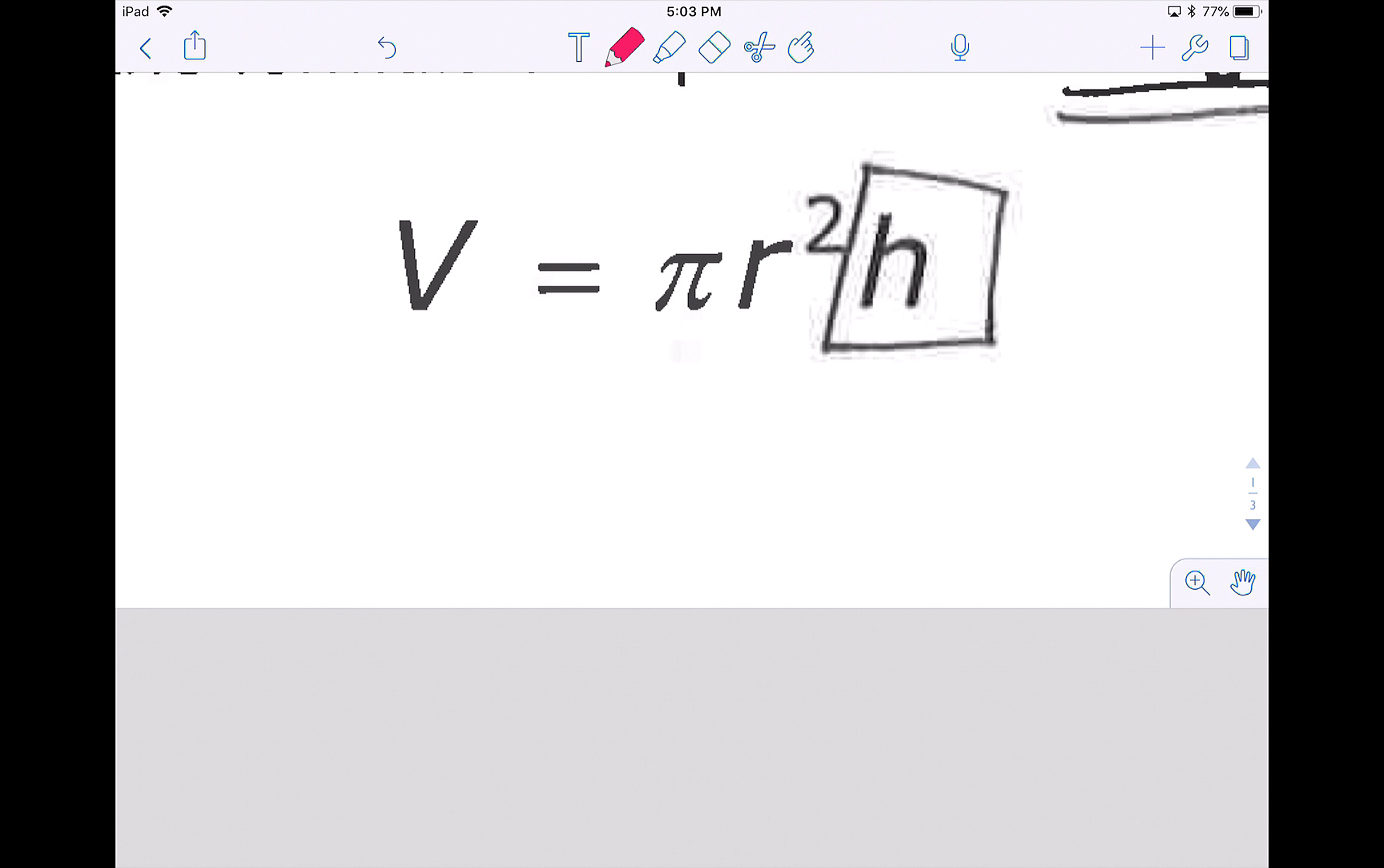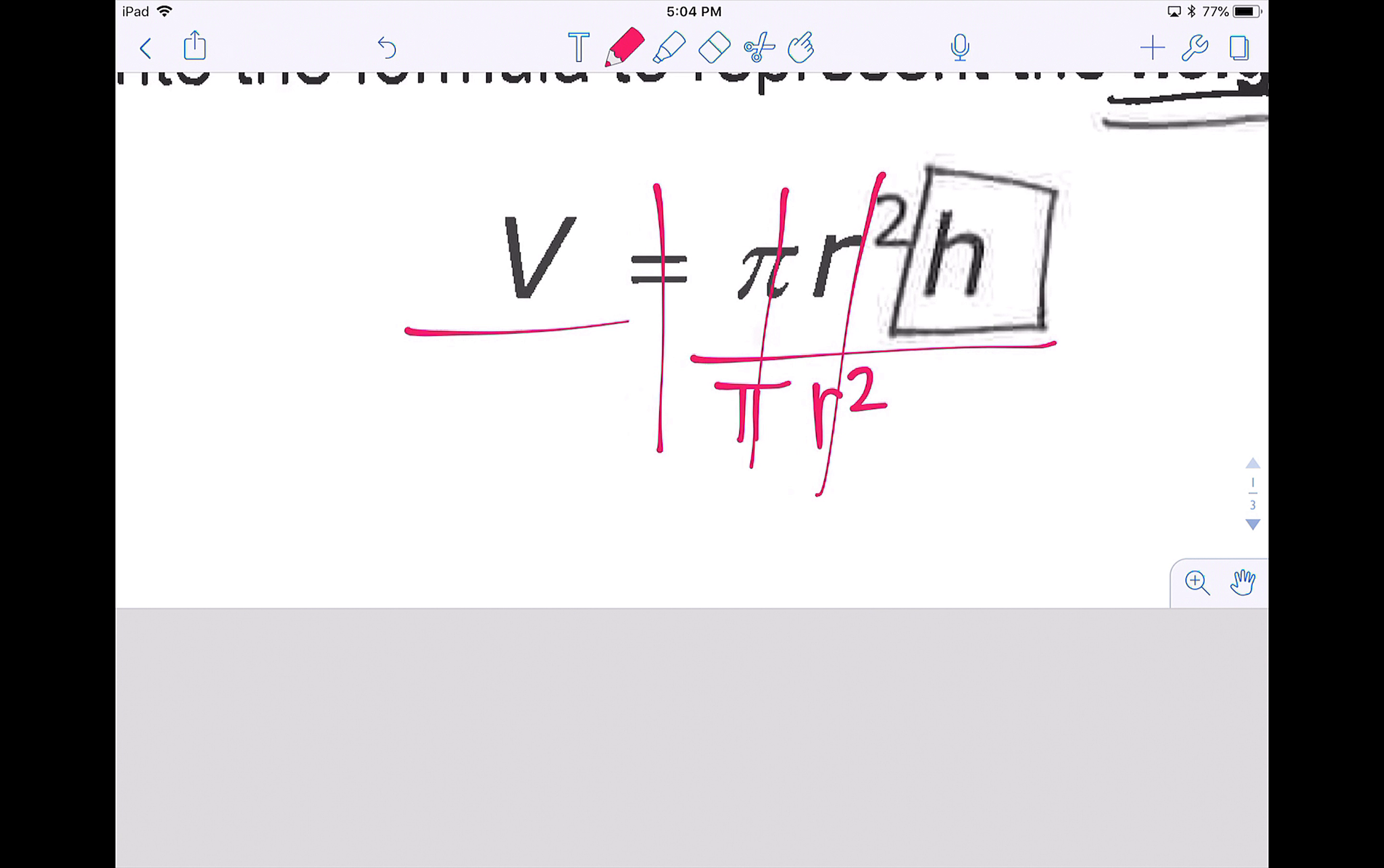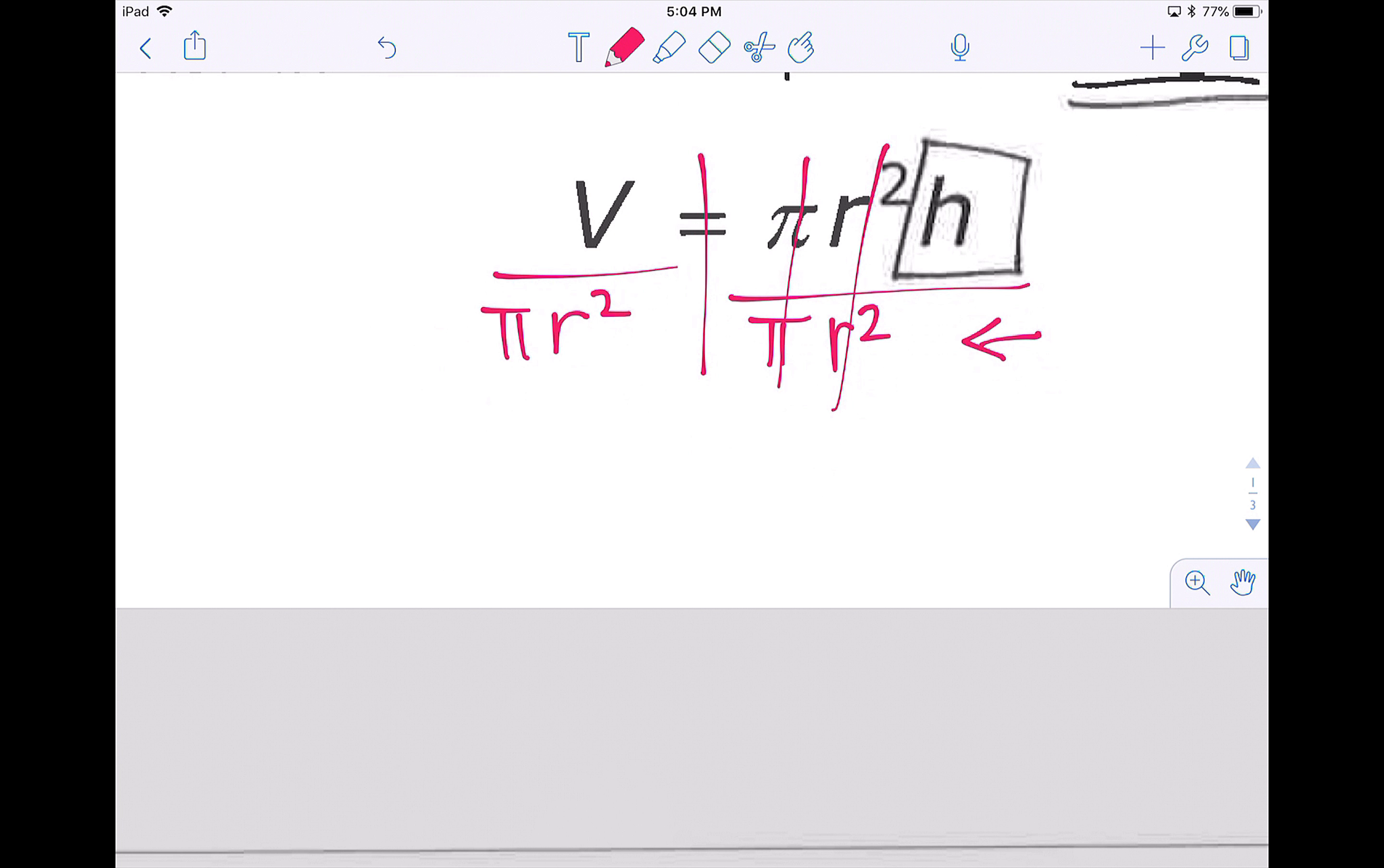When I look at h, there's no operations listed here on this right side, which means multiplication. Remember that when we get rid of multiplication, we divide. So pi divided by pi and r squared divided by r squared. So on the right side, I will have h all by itself if I divide by both of those things. Now whatever I do to one side, I have to do to the other. So pi and r squared need to be divided on the left side as well.